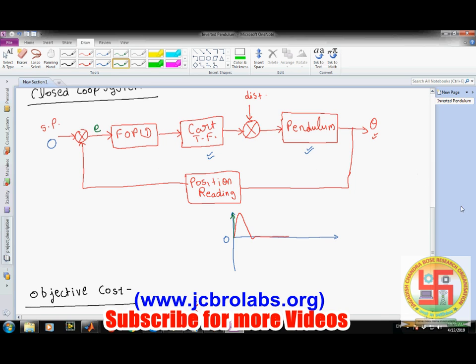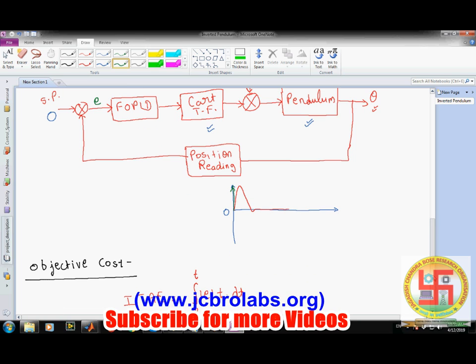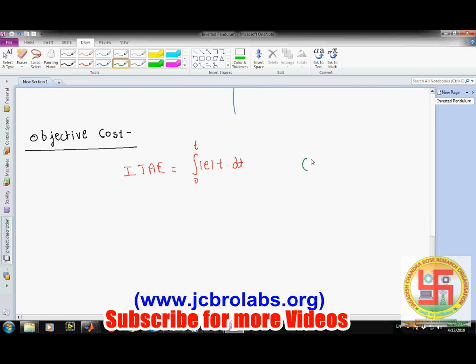Using this WCA algorithm, which is water cycle algorithm, we have minimized this function value in order to obtain the exact values of the parameters of the fractional order PID. Now let's demonstrate this project file which we have created for you. If you need this project file, you can directly contact us at jcbrolabs@gmail.com or you can contact us through our website.